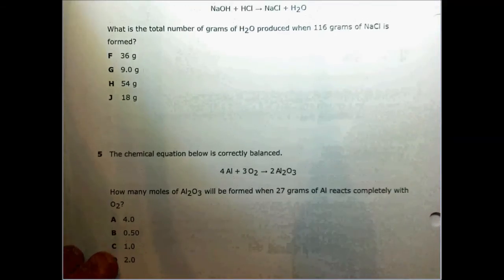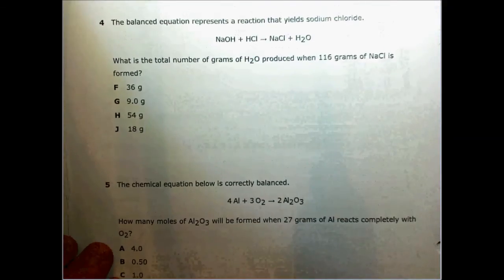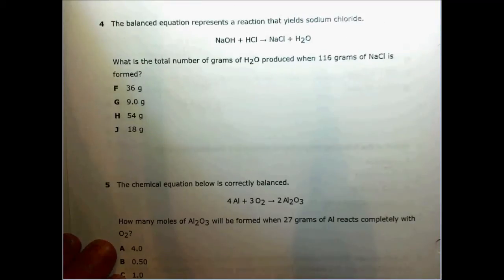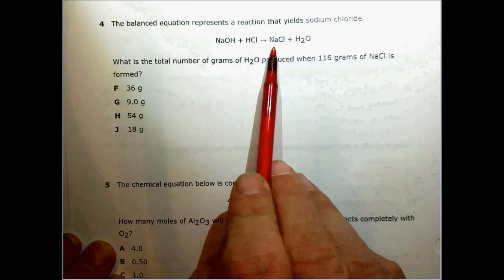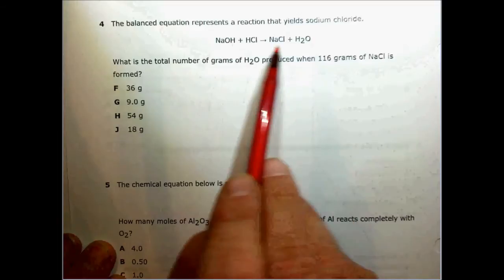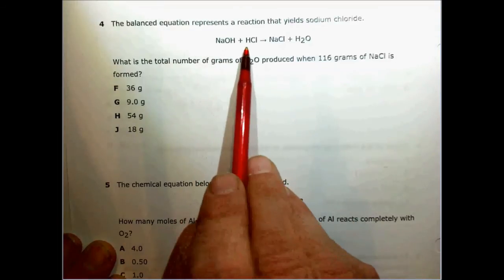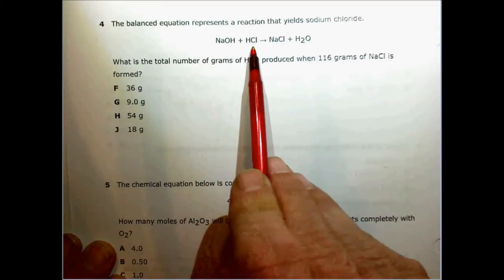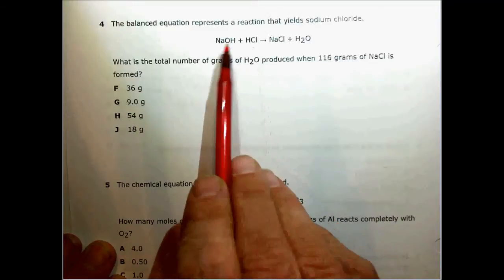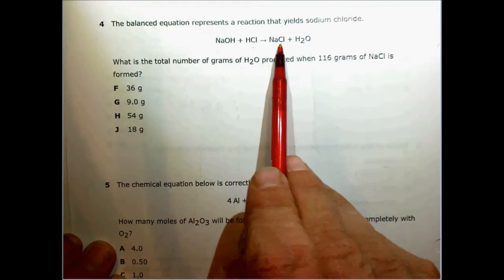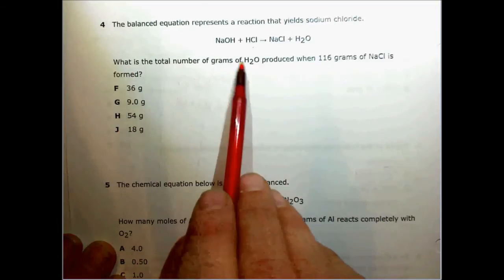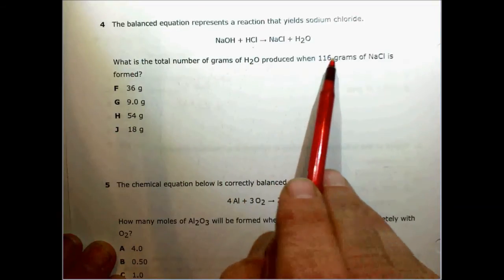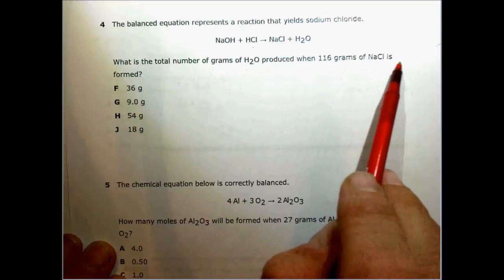Question number four says, the balanced equation represents a reaction that yields sodium chloride. We have NaOH + HCl yields NaCl + H2O. This is a neutralization reaction or an acid base reaction. HCl hydrochloric acid is the acid. Sodium hydroxide is the base. And they always yield a salt and water. What is the total number of grams of H2O produced when 116 grams of NaCl is formed?